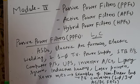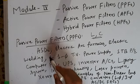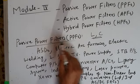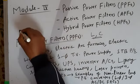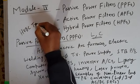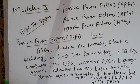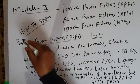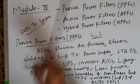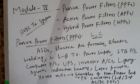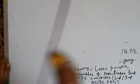Passive filters have tremendous applications in low to medium power applications and are very popular there. In high power applications, passive power filters are very popular in HVDC systems (high voltage direct current transmission systems). The primary objective of passive filters is harmonics compensation or cancellation, and some reactive power compensation also.